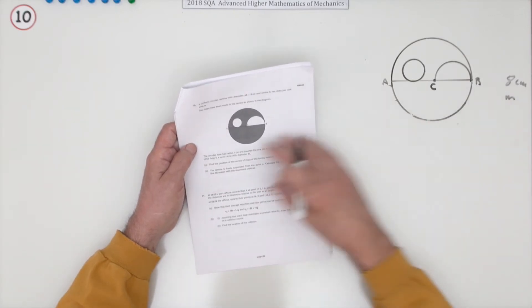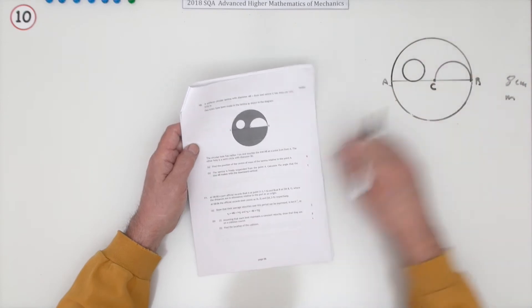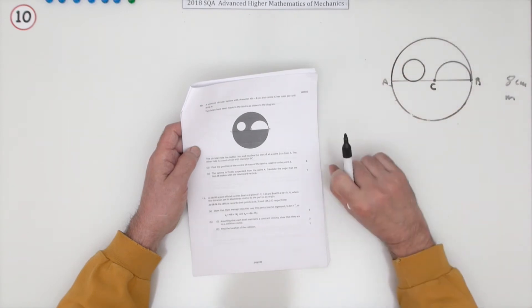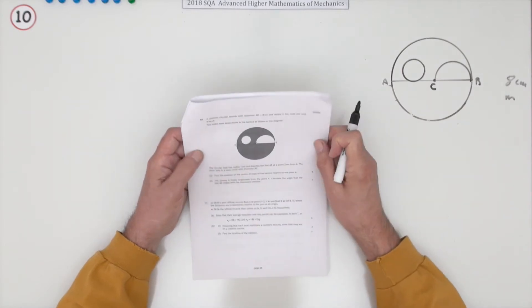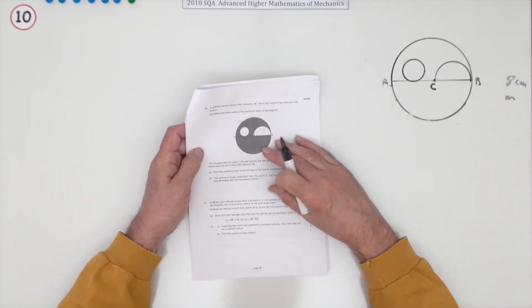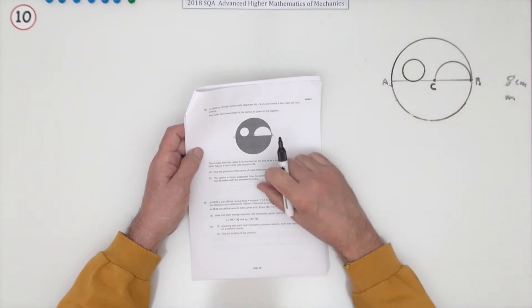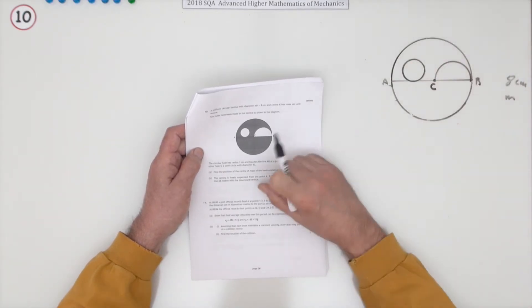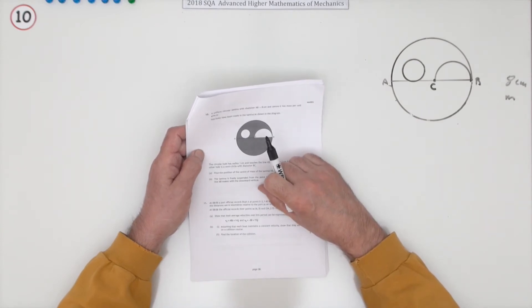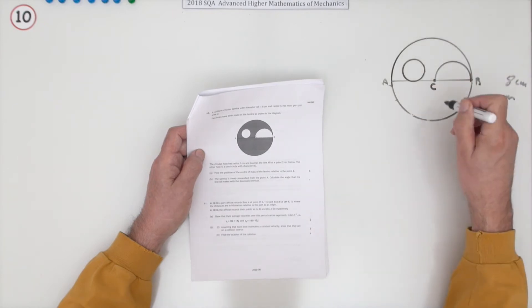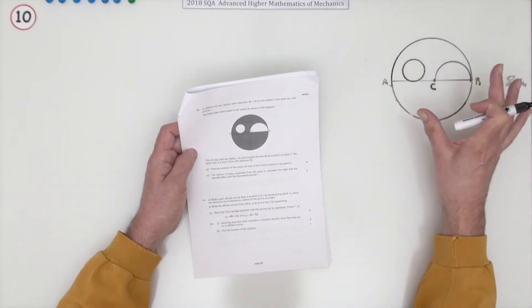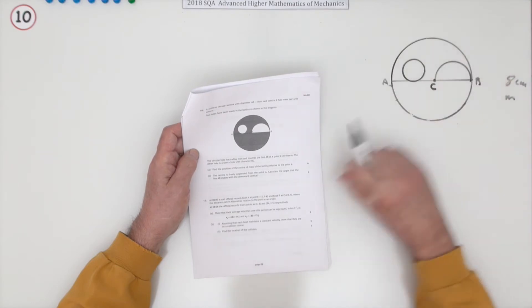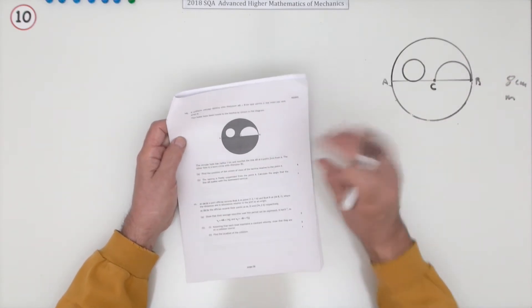That M is going to make no difference in the question because it's a uniform lamina — the density and thickness are the same at each point. So all three measures of 'centredness' are the same: the centroid (centre of area), the centre of mass (where all mass acts as a single point), and the centre of gravity. For a uniform lamina, the centroid and centre of mass are at exactly the same position.